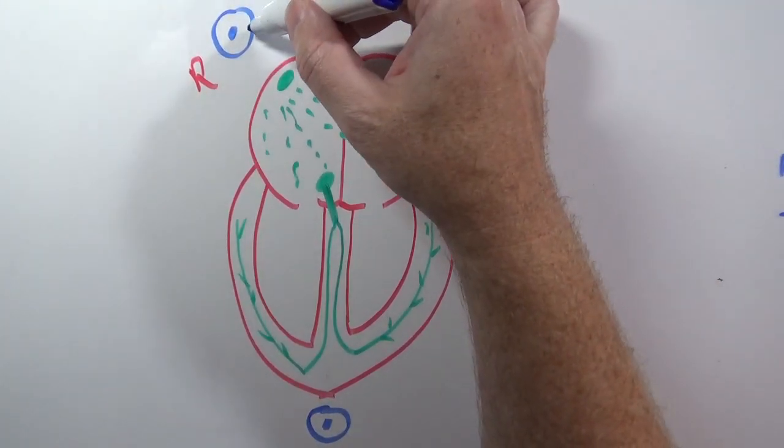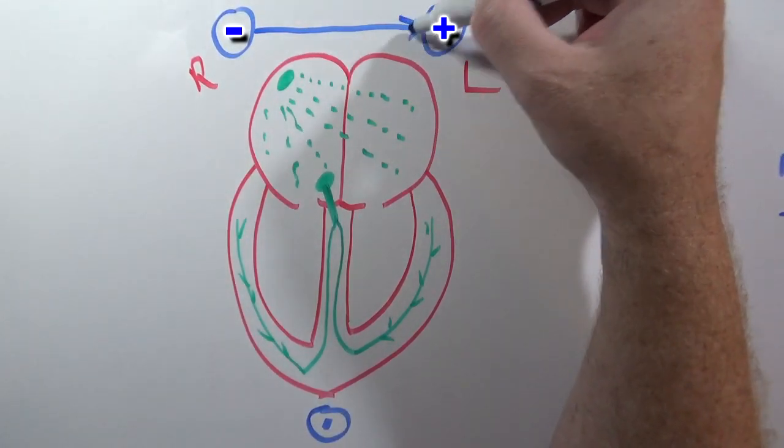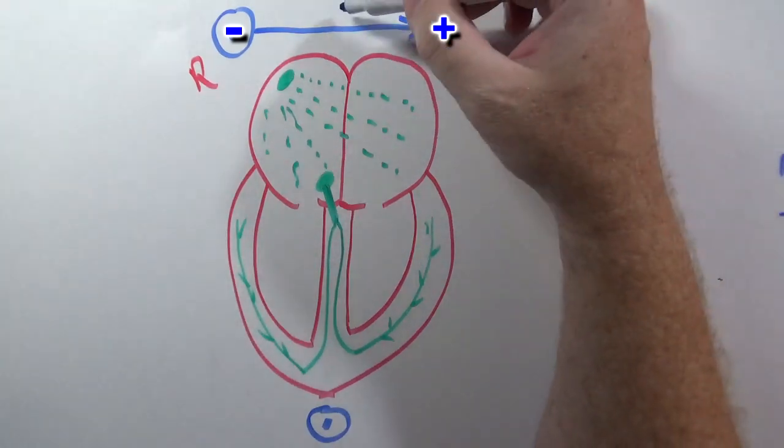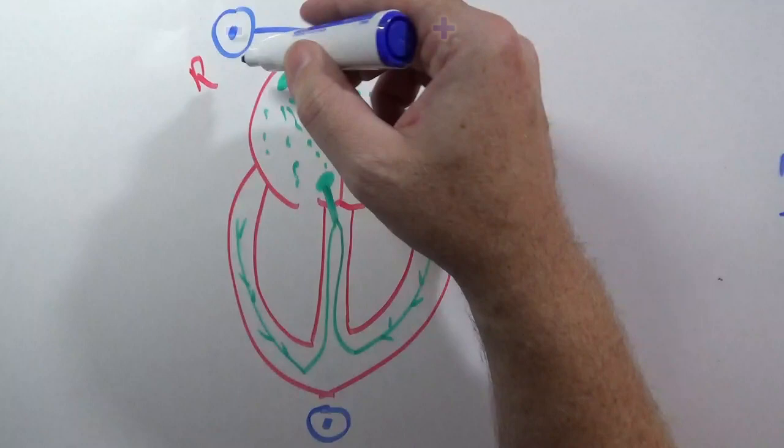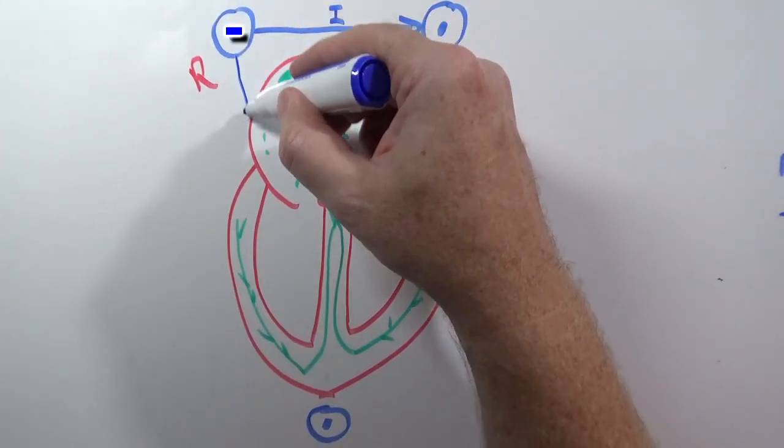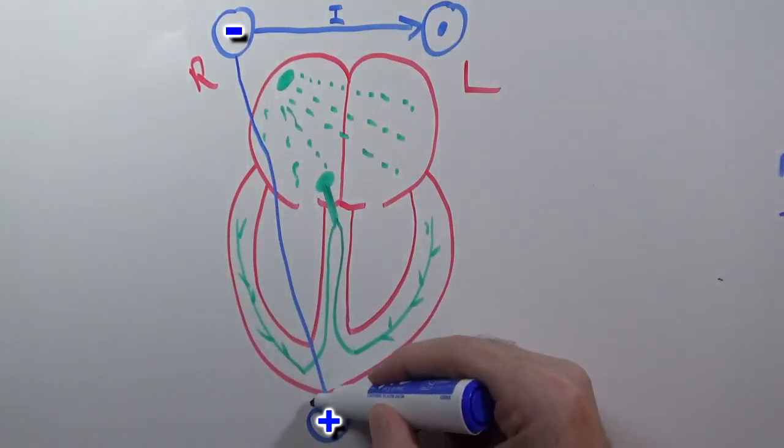I'll draw the first lead here. Here is lead number one, and we're measuring electrical activity in this direction. Lead number two is going to be measured in this direction.